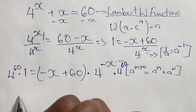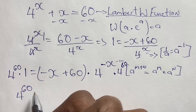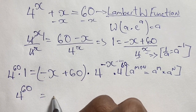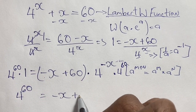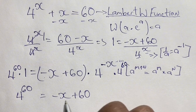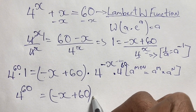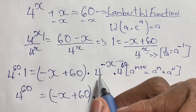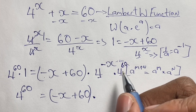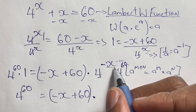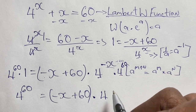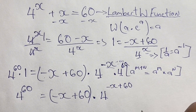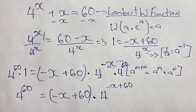So we have 4 to the power of 60 times 1 on the left, and this equals negative x plus 60 in brackets times 4 to the power of negative x plus 60. Since the bases are the same, we add the powers according to our law of indices.